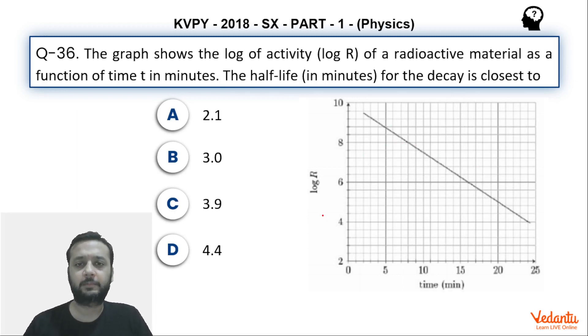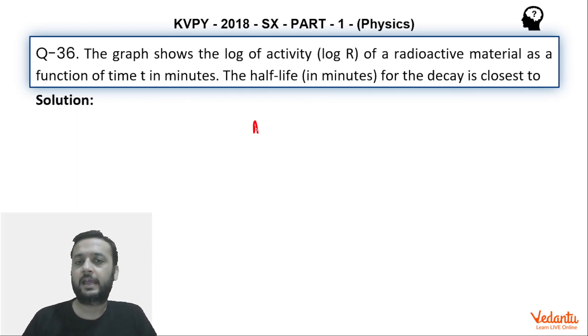And of course the graph will be a straight line because if you do the calculations, activity can be written as A equals to A0 e to the power minus lambda t. Here A is the activity of any radioactive material. So if you take the ln on both the sides, it will become ln A equals to ln of A0 minus lambda t.